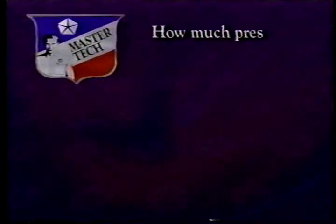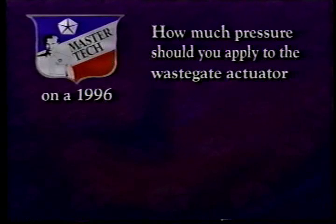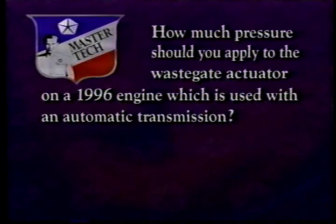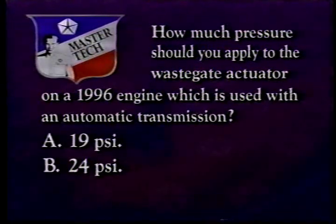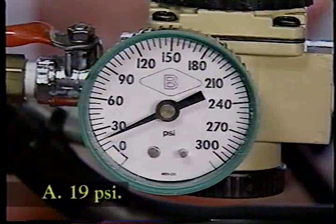Question: How much pressure should you apply to the wastegate actuator on a 1996 engine which is used with an automatic transmission? A, 19 PSI; B, 24 PSI; or C, 28 PSI? The answer is A, 19 PSI.